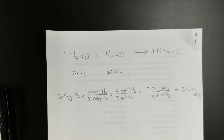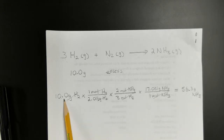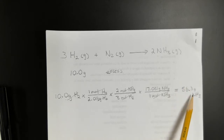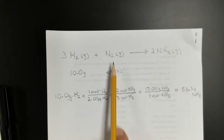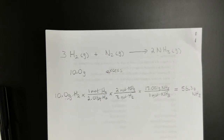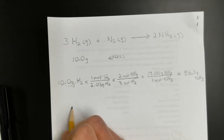This result — 56.3 grams of ammonia — is the theoretical yield. Starting with 10 grams of H₂, we could theoretically produce 56.3 grams of ammonia, assuming nitrogen is in excess as we defined in our problem.